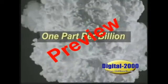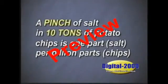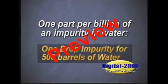Let's use one part per billion. To give you an idea of how little this would be, a pinch of salt in 10 tons of potato chips is also one part salt per billion parts chips. Similarly, one part per billion of an impurity in water represents a tiny fraction of the total amount of water. One part per billion is the equivalent of one drop of impurity in 500 barrels of water.